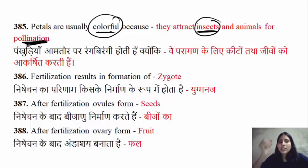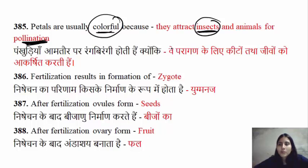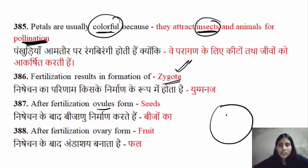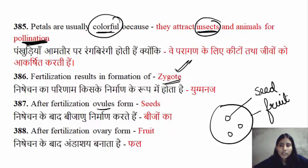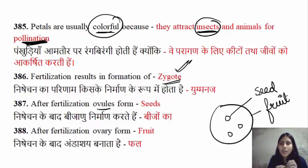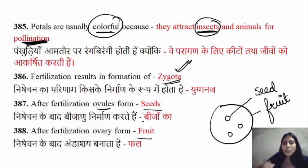Fertilization in plants results in a zygote. After fertilization, the ovules that were present are converted into seeds. The ovary is formed into fruit.